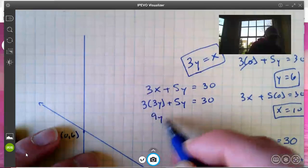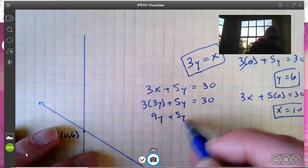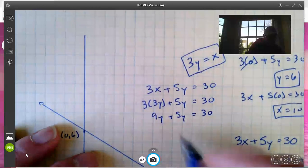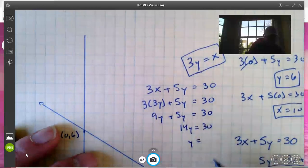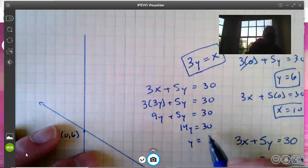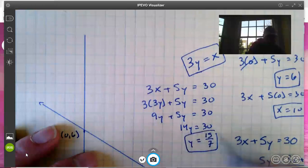So that's 9y + 5y = 30, 14y = 30, and y equals—that'll be 30 over 14, which is 15/7, which is a little less than 2.